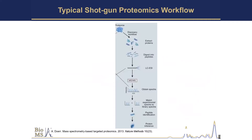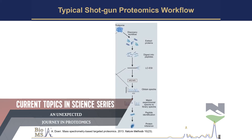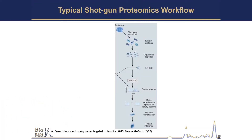We call it shotgun proteomics. Why it's called that is because we can take a sample — whether it's tissue, whole tissue lysate, or cell lysate — and we can grind it up. I call it a tissue smoothie. We get this complicated sample that we extract the proteins from. For one protein, imagine a 1000-piece puzzle — that's one protein. Then take 1000 of those 1000-piece puzzles, mix them all together, and each puzzle piece is a peptide. We're taking that puzzle piece and trying to match it back to what protein it is. We rely a lot on database searching, but the spectrum we get is a unique fingerprint to that peptide.